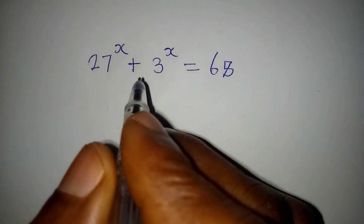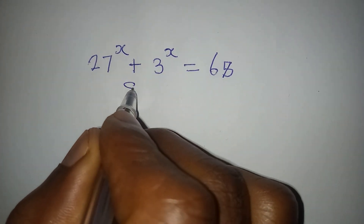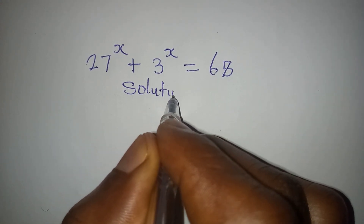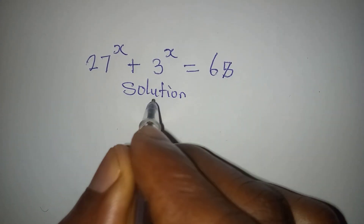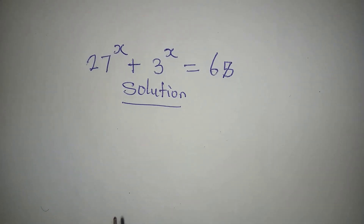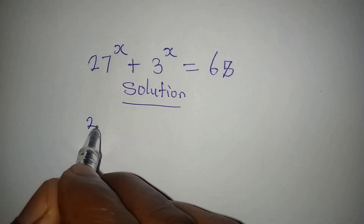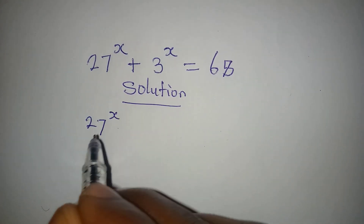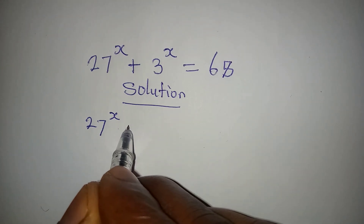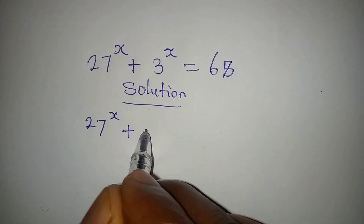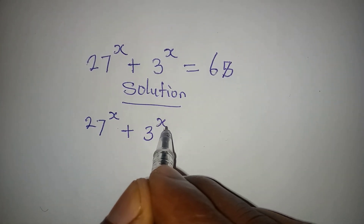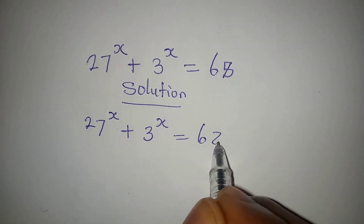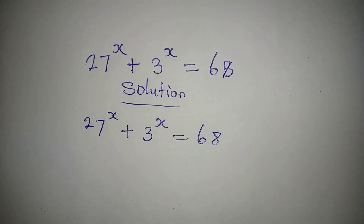Hello everyone. Let's provide the solution to this Olympiad mathematics problem: 27 to the power of x plus 3 to the power of x equals 68.